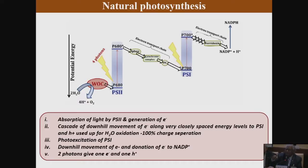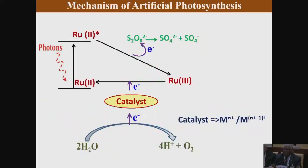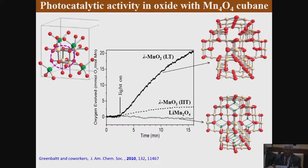However, that electron that gets excited eventually gets transferred through a cascade process. It is the second electron that gets excited in Photosystem 1 that is involved in the reduction process. So we have the oxidation process in Photosystem 2 and the reduction process that gives you food in Photosystem 1. I will not worry about food — instead of producing food, we would like to produce hydrogen. That is our main interest.